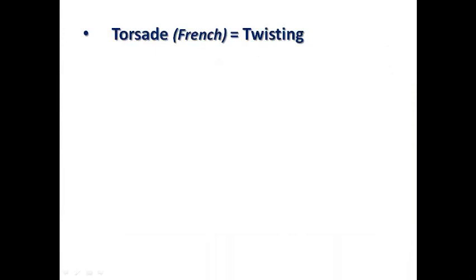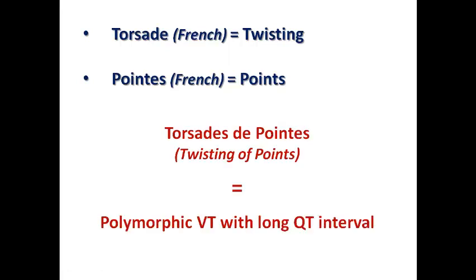So we can call this polymorphic VT with long QT interval Torsade de Pointe. Torsade is a French word for twisting and Pointe is French for points, so Torsade de Pointe means twisting of points. The name explains itself — it is a literal name meaning the axis is continuously twisting around a point, derived from ballet dancing terminology, describing the pattern of continuous axis change of about 180 degrees.